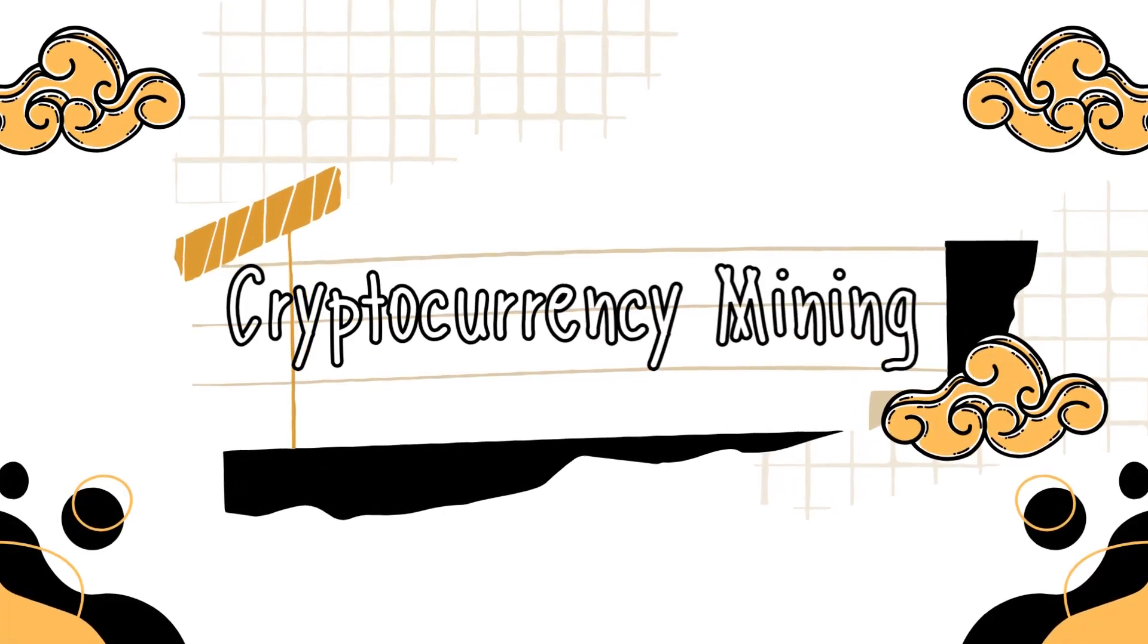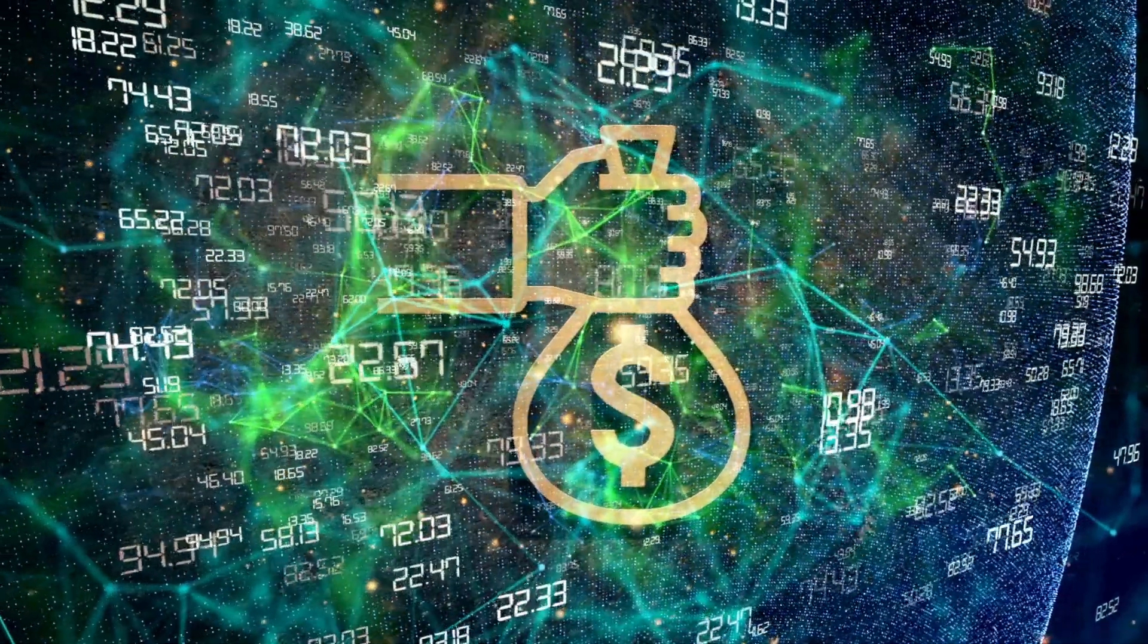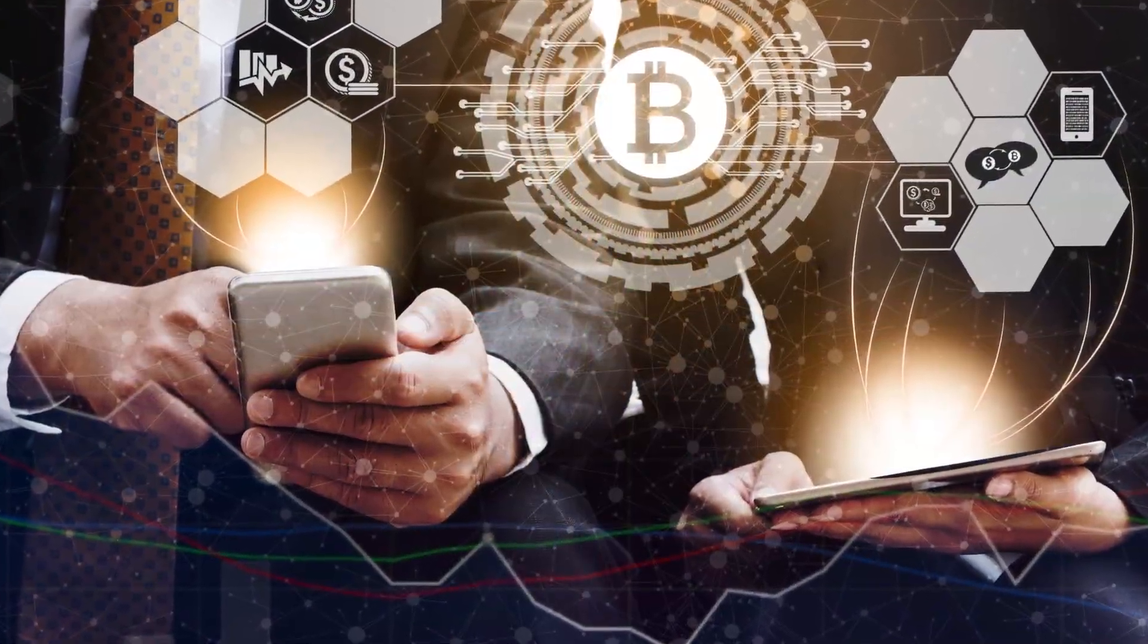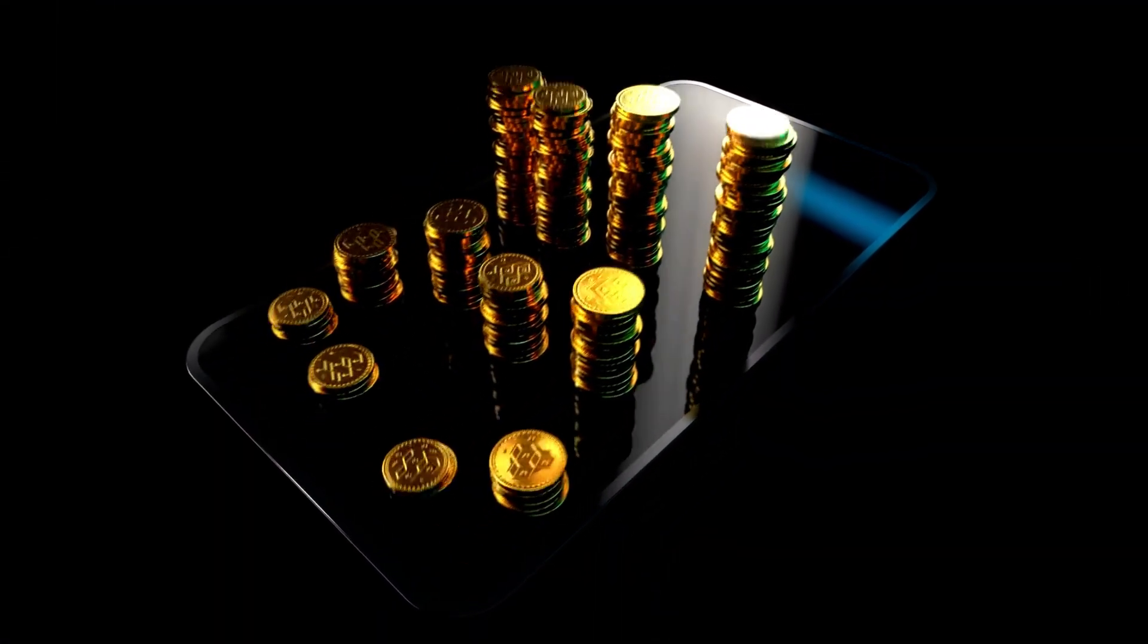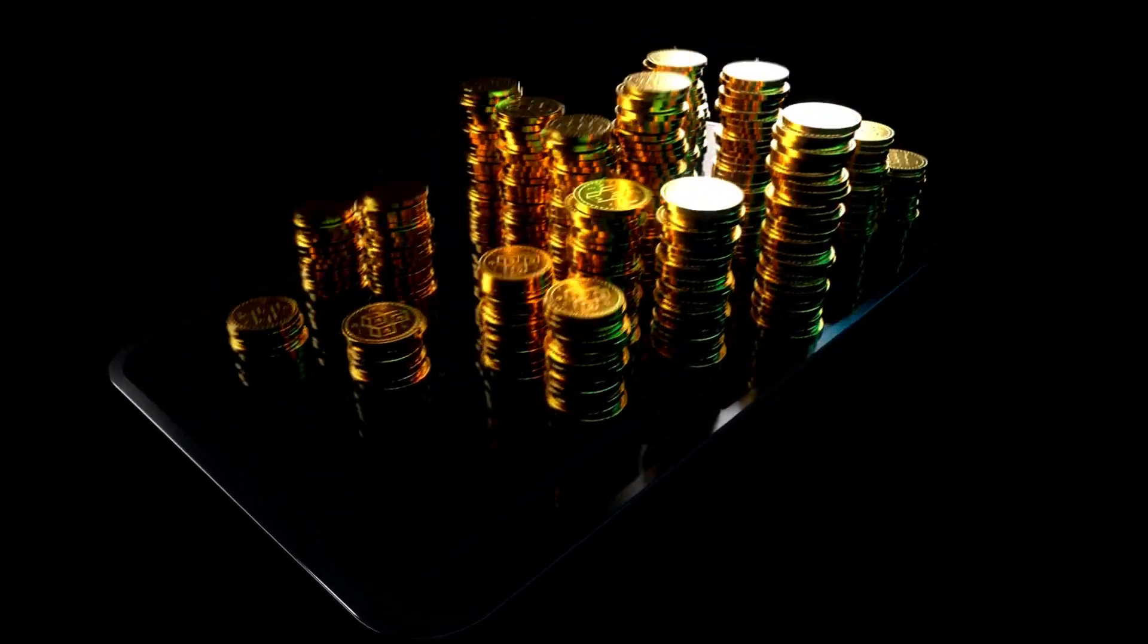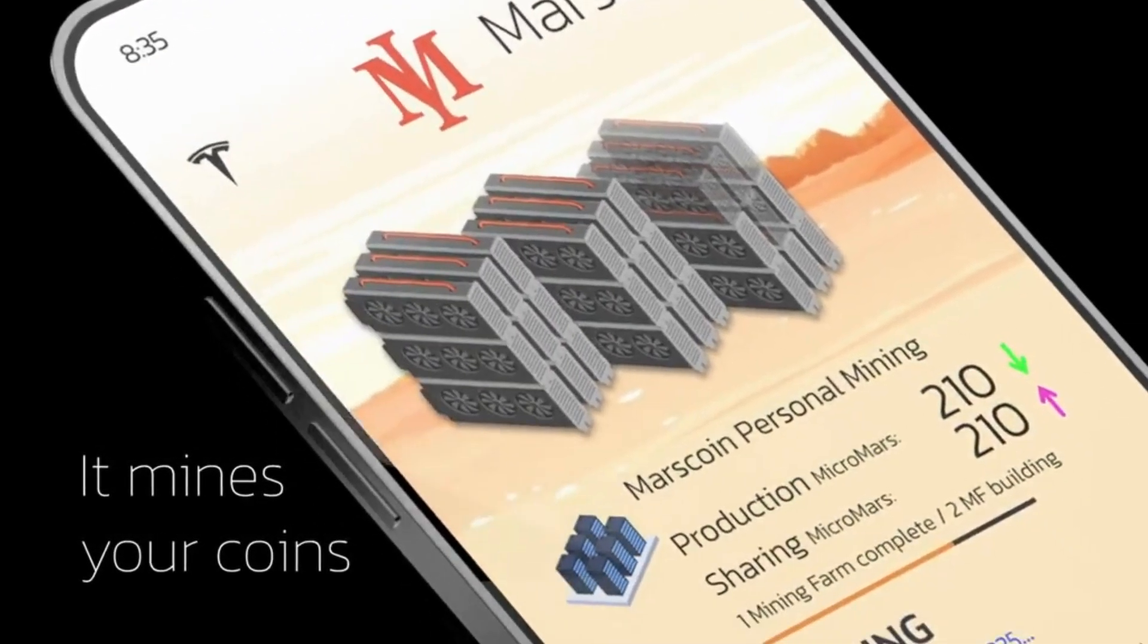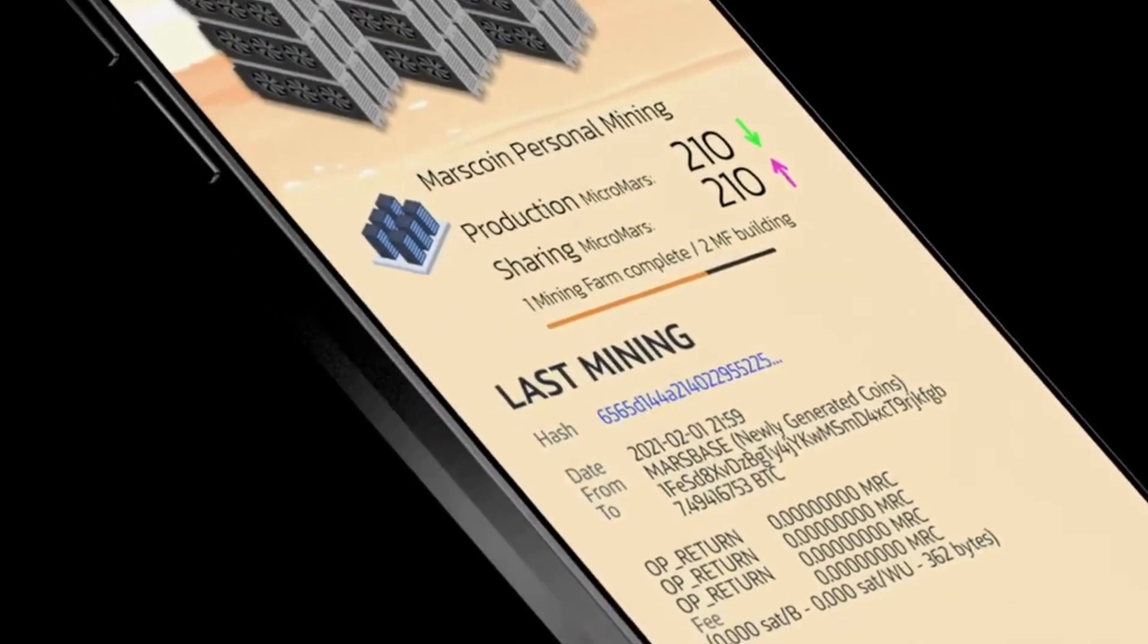Elon Musk's interest in cryptocurrencies has been extensively publicized, particularly his vocal support for Bitcoin and Dogecoin. As a result, the possibility of a Tesla phone with cryptocurrency mining capabilities is not altogether implausible. If implemented, this functionality might allow users to create a cryptocurrency known as Marscoin, which Musk has discussed in tweets.